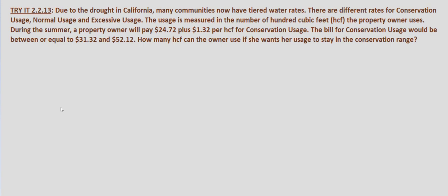During the summer, a property owner will pay $24.72 plus $1.32 per HCF for conservation usage. The bill for conservation usage would be between $31.32 and $52.12, and we're asked how many HCF the owner can use if she wants her usage to stay in the conservation range.